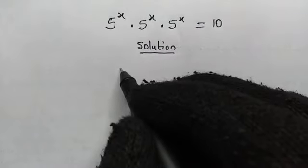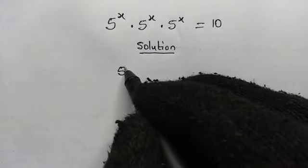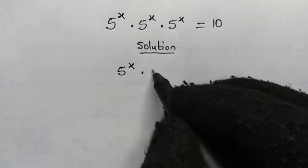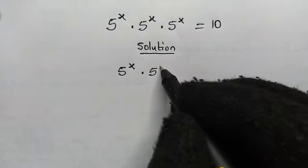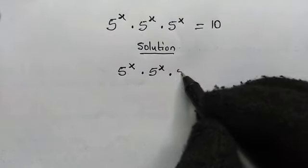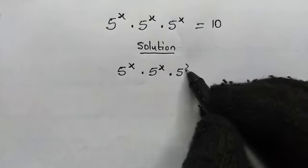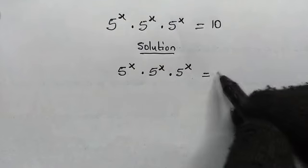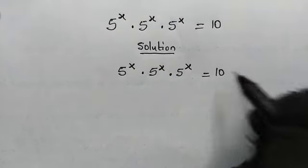From the left hand side, we have 5 to the power of x, multiplied by 5 to the power of x, multiplied by 5 to the power of x. We know this is equal to 10.